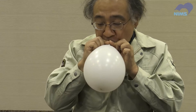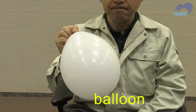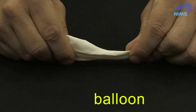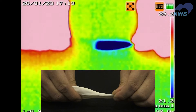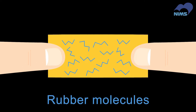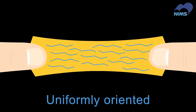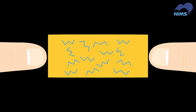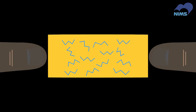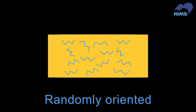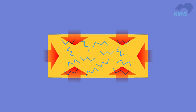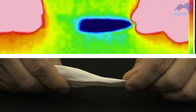A similar phenomenon can be observed with a rubber balloon. When you stretch the balloon and release the tension, the temperature decreases. This is the mechanism responsible. When the balloon is stretched, its long molecules are pulled into alignment with the tension. Without the tension, the molecules are randomly ordered. This transition requires energy, which is absorbed from the balloon's surroundings. That's why the temperature decreases.